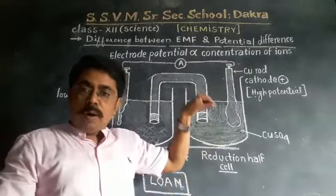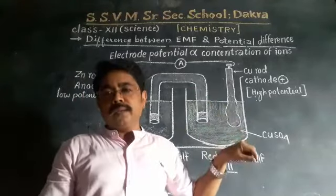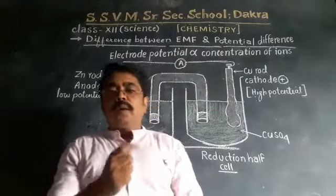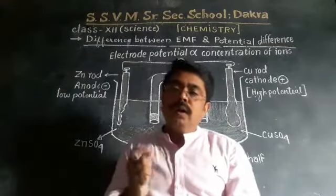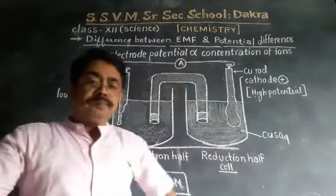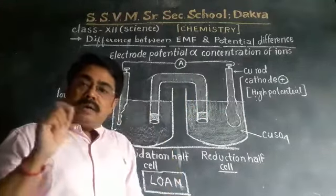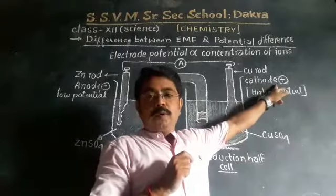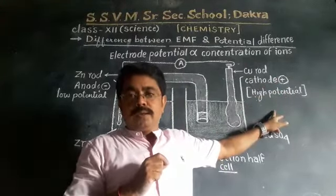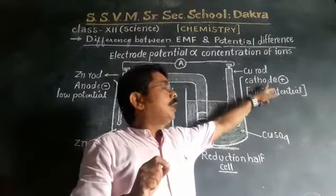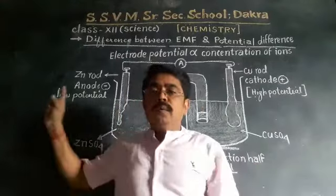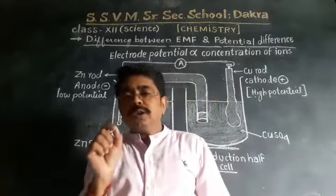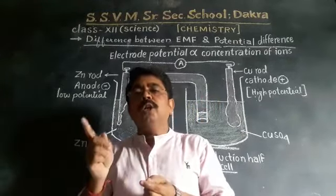The electrode is dipped in a solution, and the electrode potential depends on the ion concentration of that solution. If the ion concentration is higher, the electrode potential is higher; if the ion concentration is lower, the electrode potential is lower. In physics and chemistry, a positive charge is considered as high potential, while an electrode with negative charge is at low potential.